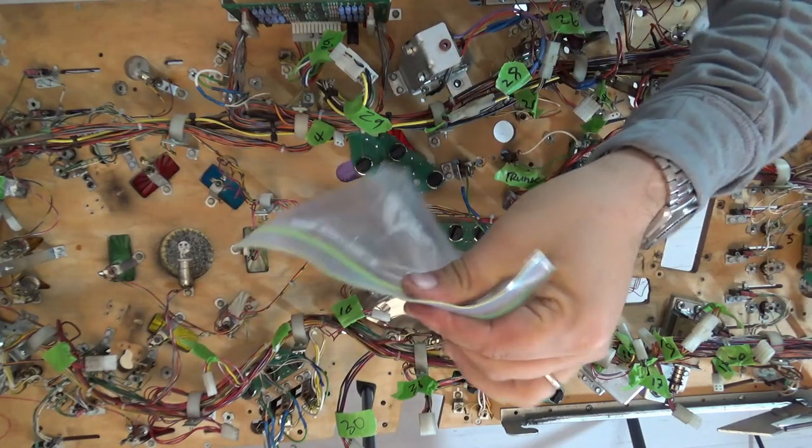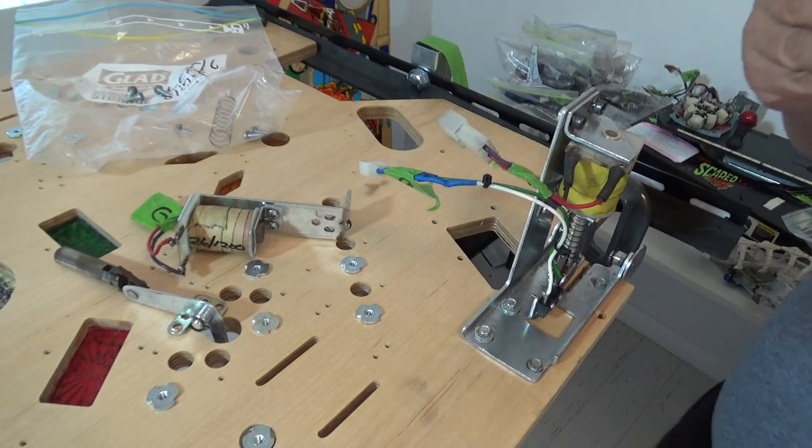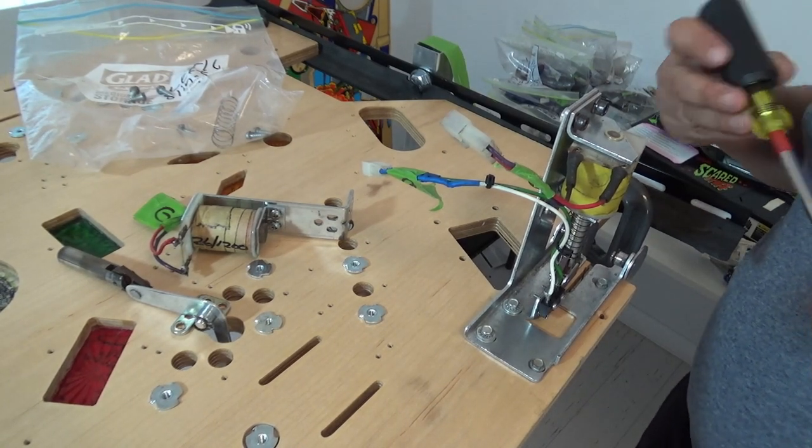So that's that bag, bag 16 done. I'm going to get this all into the tumbler. So fast forward 24 hours and all the slingshot parts are out of the tumbler and ready to go back on the playfield.